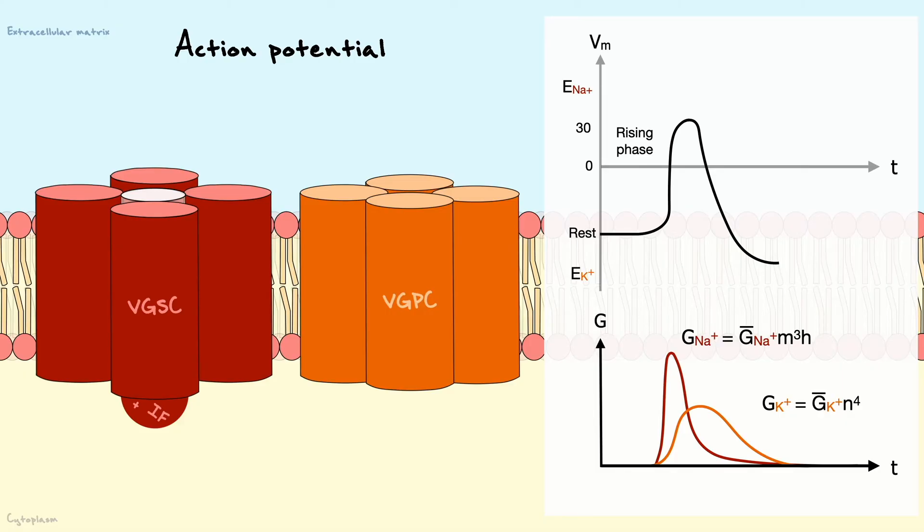For terminology's sake, the repolarization is known as the falling phase and the peak of the action potential is known as the overshoot. You will notice that the hyperpolarization by potassium pushes the potential below the resting membrane potential. This peak is referred to as the undershoot.